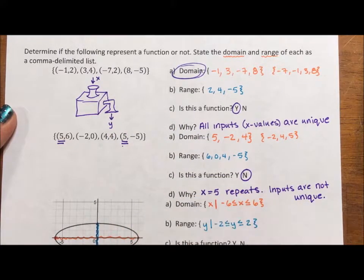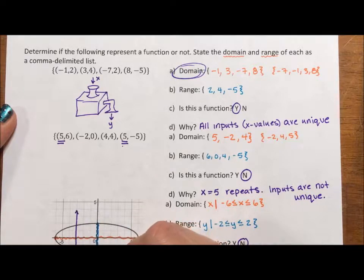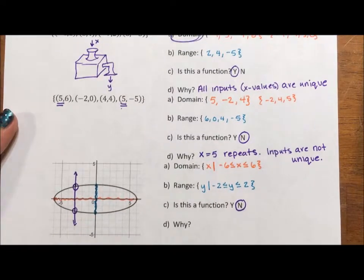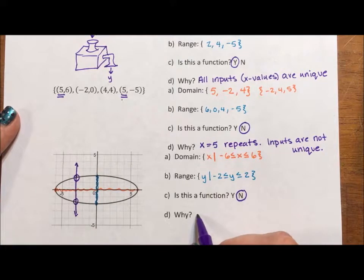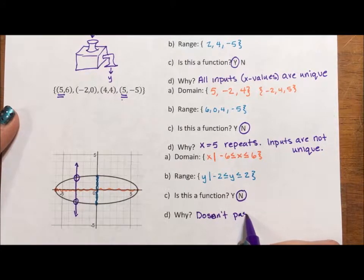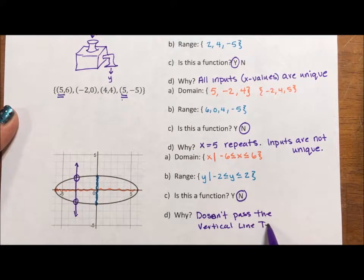For this one, this one is not a function. And it's really fun with a graph because you test with something called the vertical line test. The vertical line test says if you can draw a vertical line that hits your graph in two spots, it is not a function. So for this last one, it is not a function. Why? Because it doesn't pass the vertical line test, which my students usually say VLT.